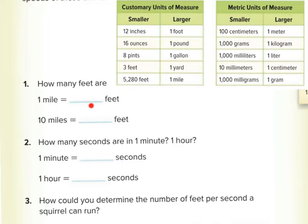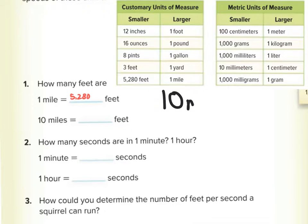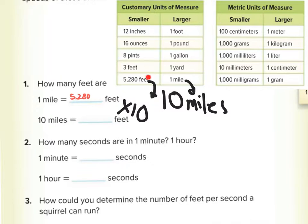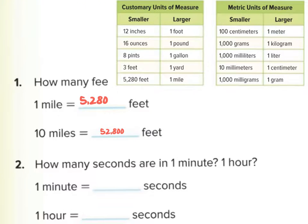One mile has 5,280 feet. What about 10 miles? If one mile has 5,280 feet, then for 10 miles we multiply by 10 — because we went up by a factor of 10. So we multiply 5,280 by 10 to get 52,800.